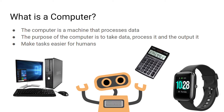Starting off, we're quickly going to look at what a computer is. A computer is any kind of machine that takes some form of data in, processes it, and then produces an output. They're machines that are designed to make tasks easier for humans to perform.